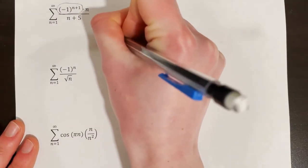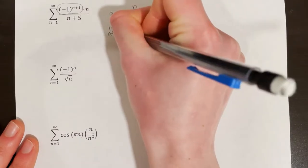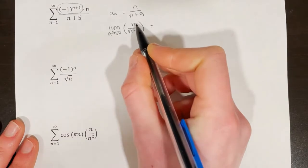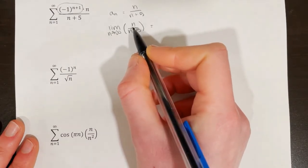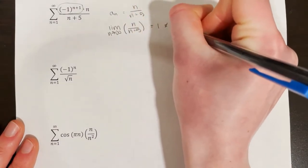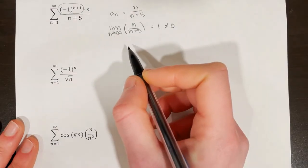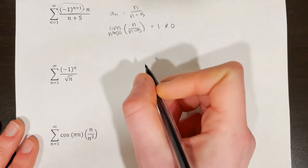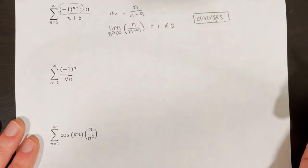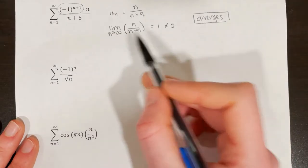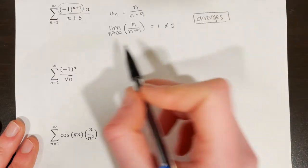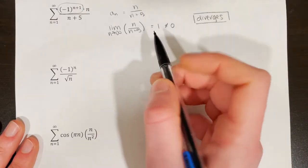The degree of the numerator and denominator are the same, so we take the ratio of leading coefficients: 1 over 1 equals 1. Since this limit is not equal to 0, the condition for the alternating series test is not met, and we say the series diverges. Specifically, it diverges by the nth term test, because the limit as n approaches infinity of a sub n is not equal to 0.